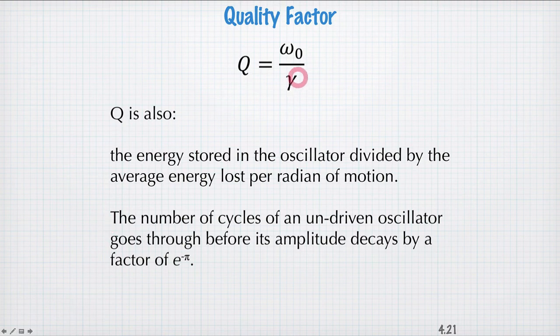The quality factor, ω₀/γ, is also the energy stored in the oscillator divided by the average energy lost per radian of motion, and it's also the number of cycles an undriven oscillator goes through before its amplitude decays by a factor of e^(-π). So these two things are equal also to the Q factor, and that's something that you can prove.